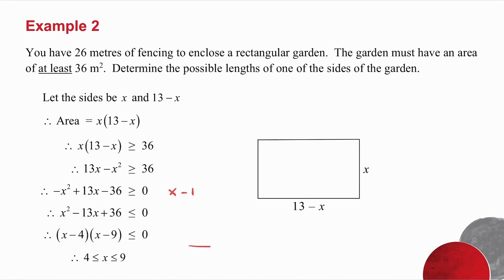Factorize the trinomial. You have a quadratic inequality. It's a positive x squared. My zeros are 4 and 9. Where is this less than or equal to 0? There. In other words, when x is greater than or equal to 4, less than or equal to 9. And those are the possible lengths of one of the sides.